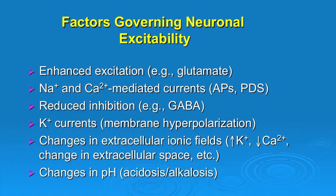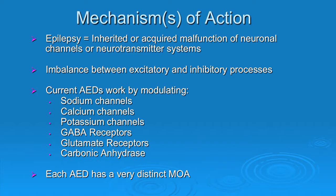What we're going to focus on today are the major targets. If we talk about trying to bring excitatory and inhibitory forces back into balance, we can look at how our current antiepileptic drugs work. Many of them have multiple mechanisms of action. We can sort this out by drugs that work at modulating or stabilizing sodium channels, calcium channels, potassium channels, or that work on GABA receptors or GABA concentrations within the synapse.